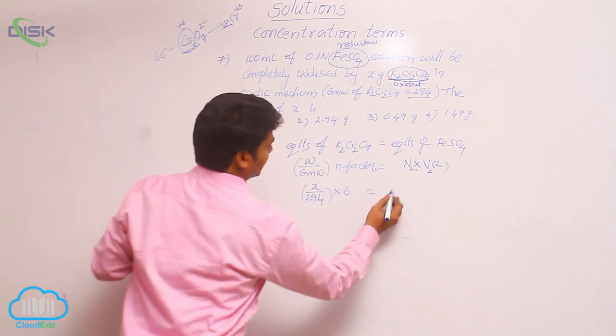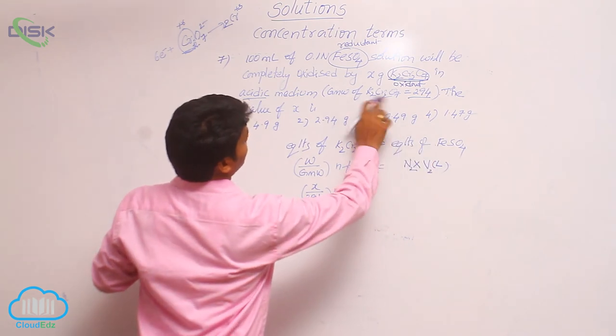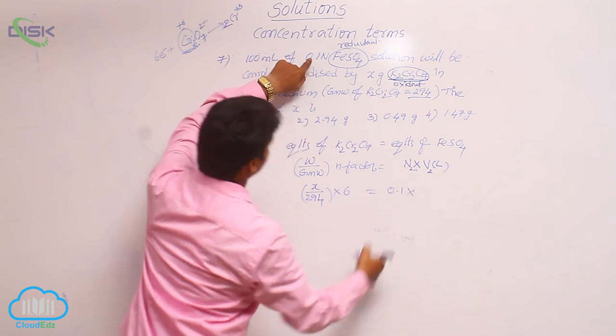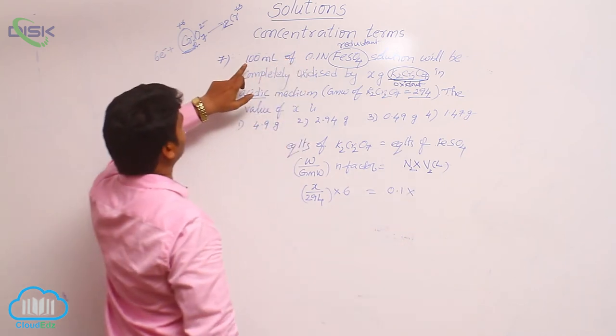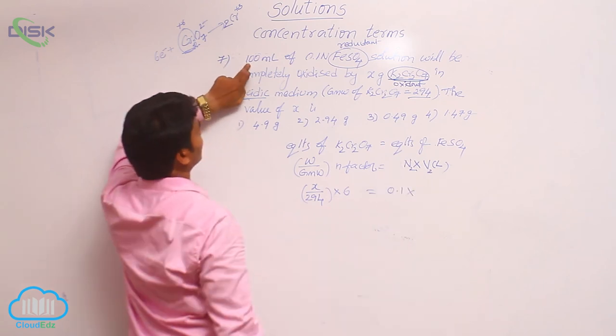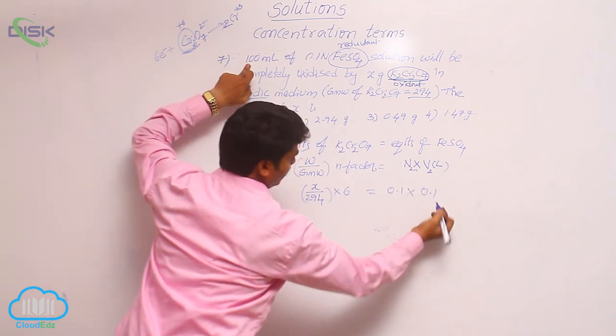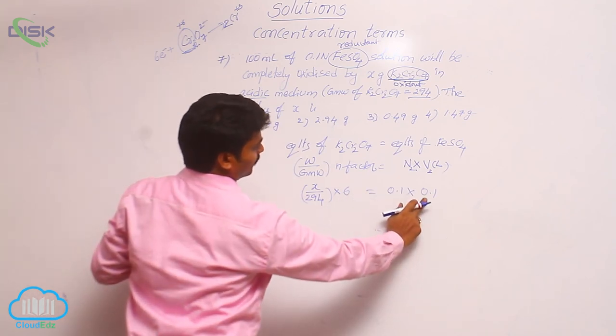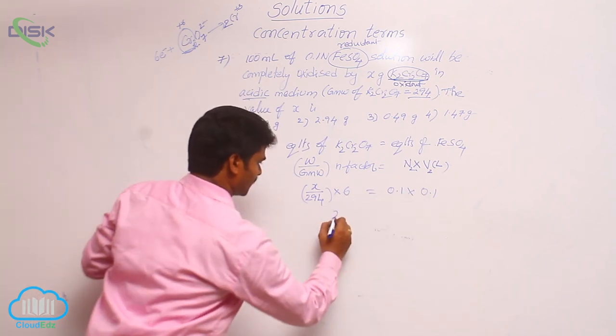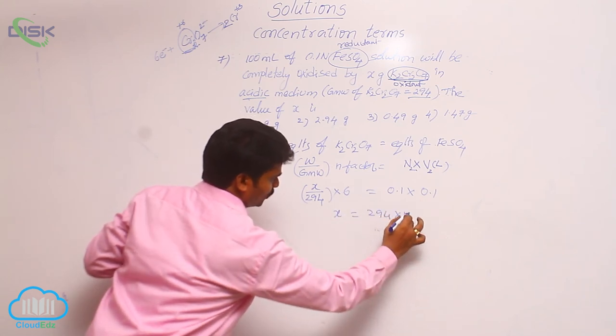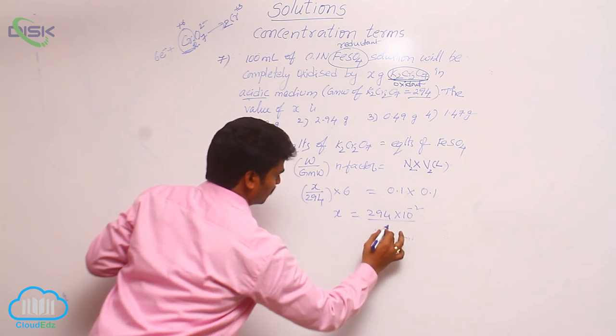Next, normality of FeSO4 is already given. It's 0.1. What is the volume? 100 ml. But the formula requires volume in liters, that means 0.1. This total gives 0.1 times 0.1, which is 10^-2. Now x equals 294 times 10^-2 divided by 6. What is its value?